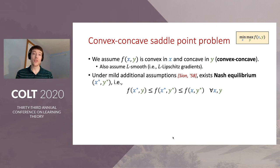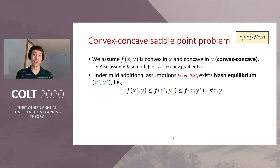One advantage of assuming convexity is that under mild additional assumptions, namely compactness of the domain, it's straightforward to show that there exists a Nash equilibrium x*, y*. This is defined as a point in which each player is best responding given the other player's choice of action. In particular, for any alternative x of the min player the value of f will only increase, and for any alternative y of the max player the value of f will only decrease.